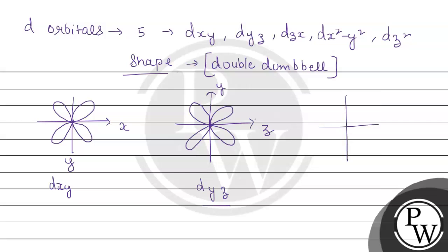Now let us see the next one - dxz. In dxz, this is the x-axis and this is the z-axis. Here also the electron density does not lie along the axis. So in dxy, dyz and dxz, the electron density does not lie along the axes.